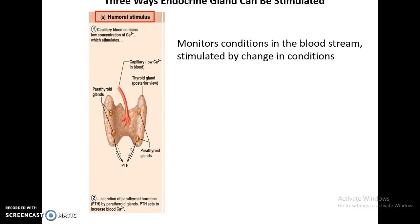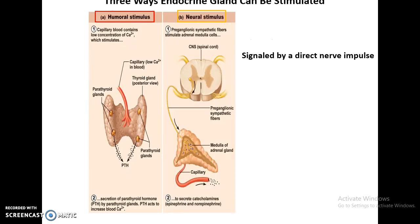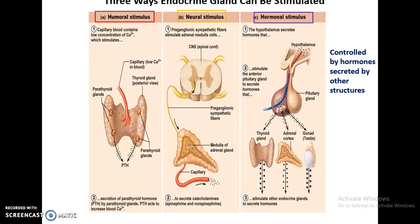Endocrine glands can be controlled by the composition of materials in the bloodstream. For instance, low calcium levels might cause some structures to produce hormones. They can be controlled by direct neural stimulus — an impulse from the brain causing it to secrete hormones — or they can be controlled by other hormones produced by other structures.